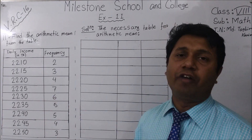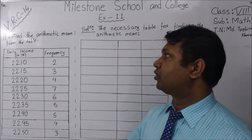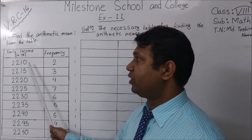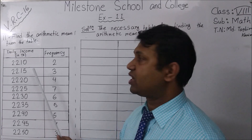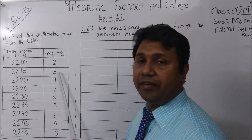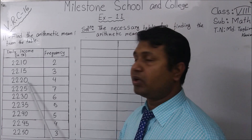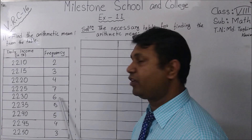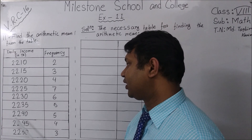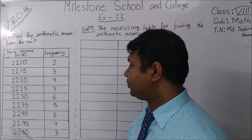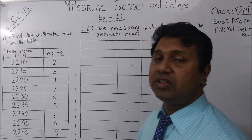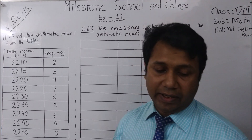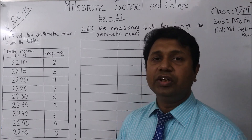Here is question number 11 of exercise 11. Find the arithmetic mean from the table. Daily income of a few people: 2210 taka earned by 2 people, 2215 taka by 3 people, 2220 taka by 5 people — wait, 4 people — 2225 taka by 7 people, 2230 taka by 6 people, 2235 taka by 5 people, 2240 taka by 5 people, 2245 taka by 4 people, and 2250 taka by 3 people daily.